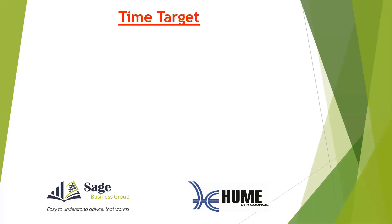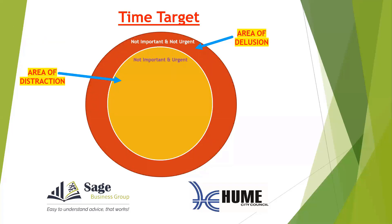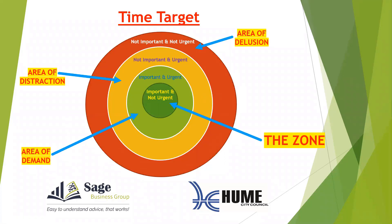Projects and tasks can be identified as fitting to one of four areas. Target area three is the area of distraction or deception — tasks that are not important, but they're urgent. Target area number two, the area of demand, is where the task is both important and urgent. And target area number one, the zone — tasks or projects that are important, but not urgent.